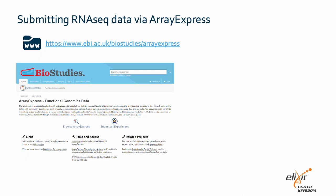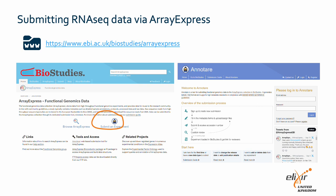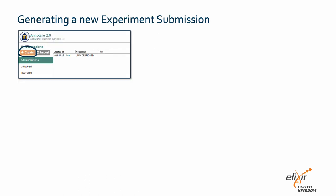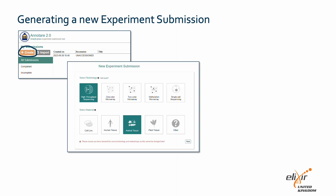Let's navigate to the ArrayExpress website, which you will find at ebi.ac.uk/biostudies/ArrayExpress. To start a new submission, click the 'Submit an experiment' button. This will bring you to the Annotare site where you will perform the actual submission. Go ahead and log in, or if you don't have a login yet, you can create one. Once you have logged in, the submission form will be displayed. Click on the 'Create' button to start.